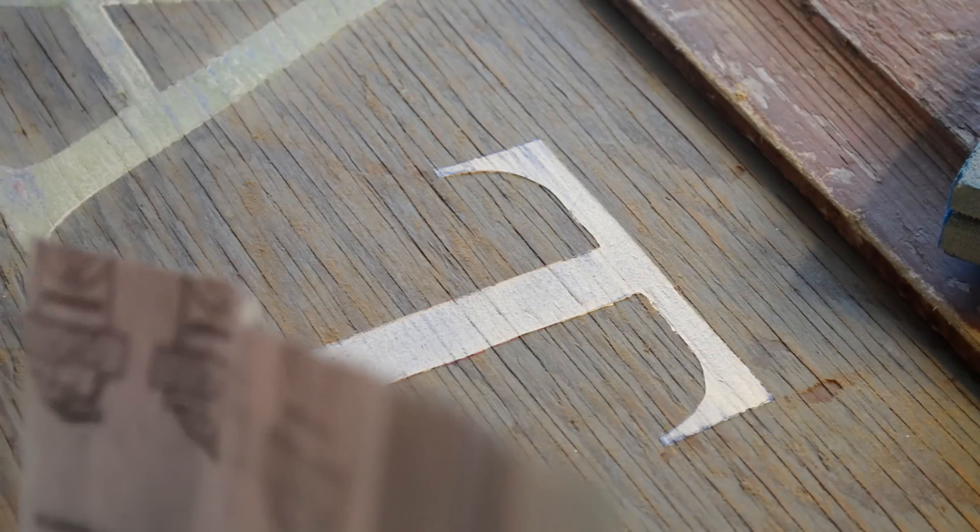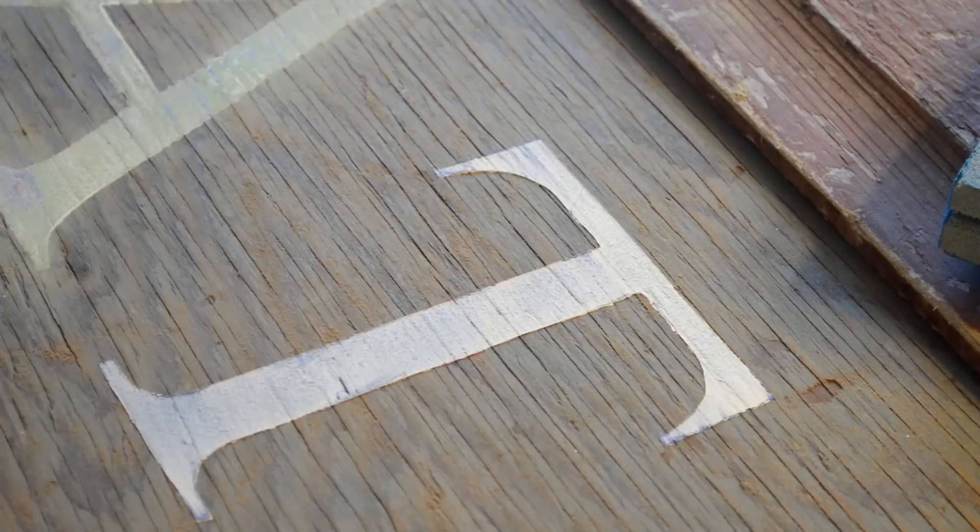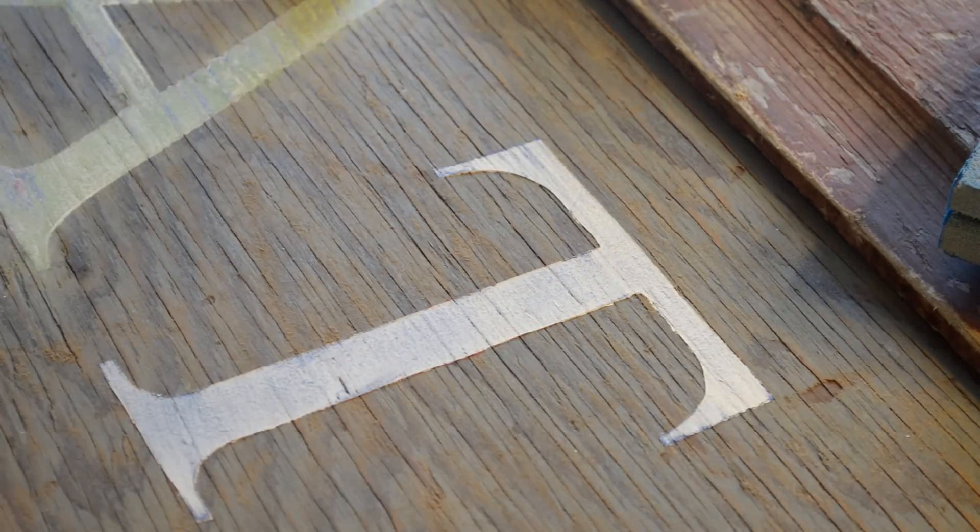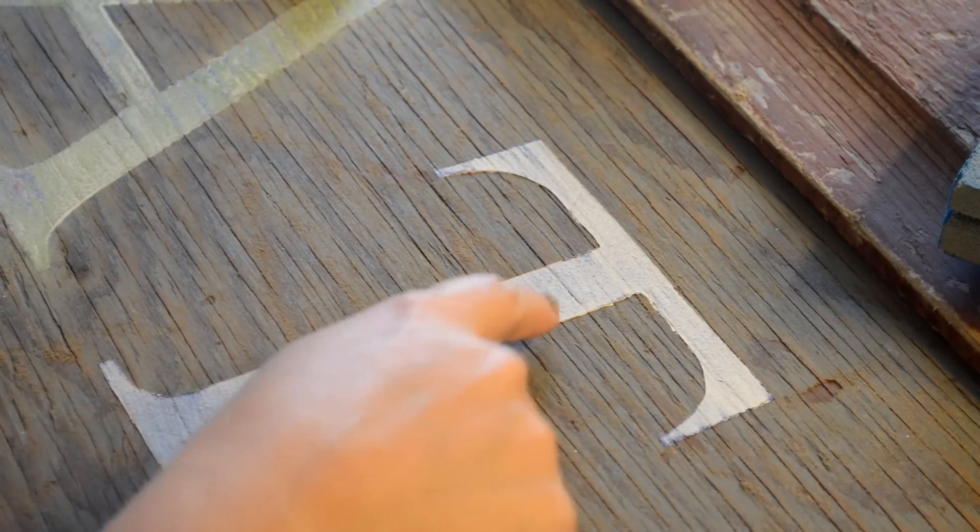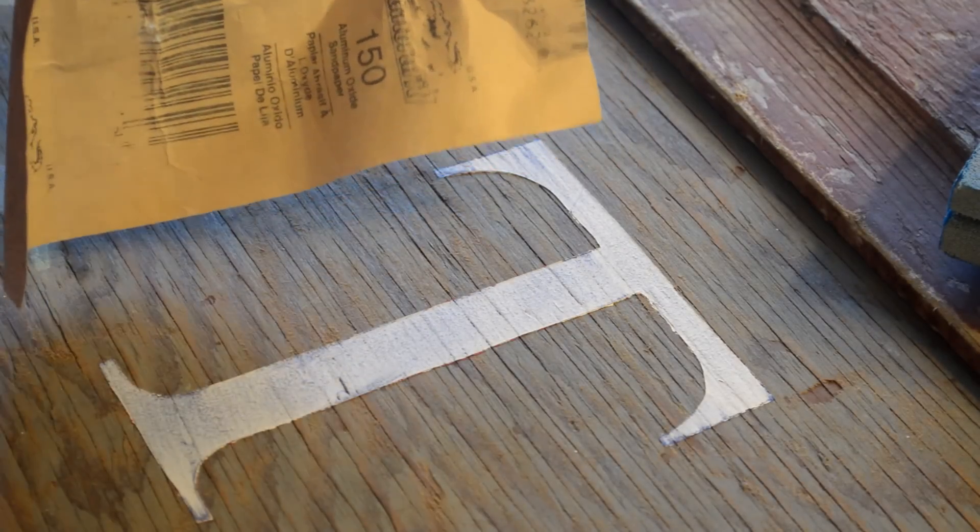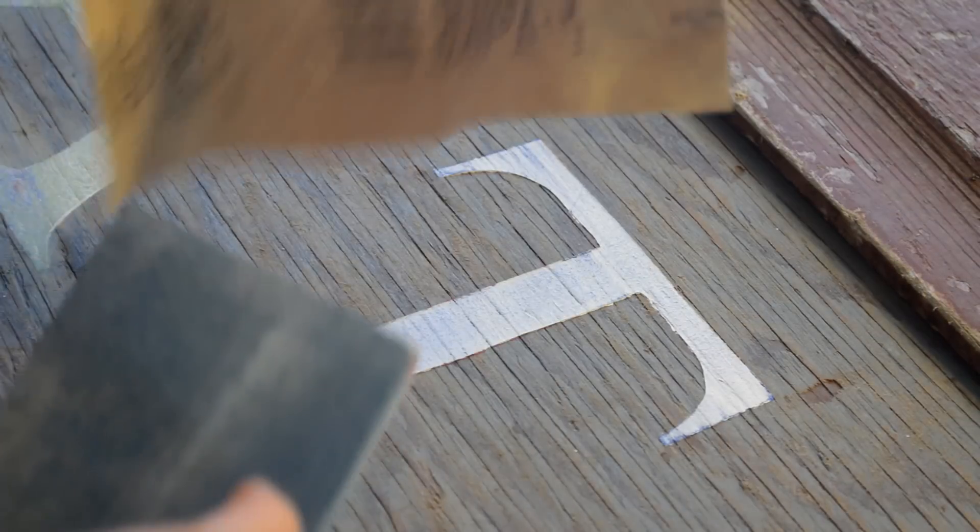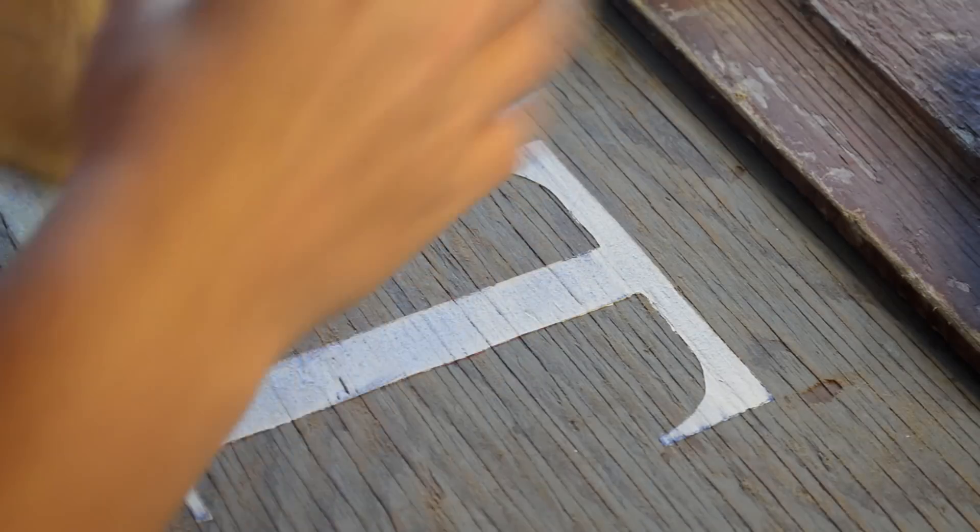Alright, so I finished the E and the A, and now I have the last color on the T. I'm going to show you how to bring out all those beautiful colors that you worked so hard on. So you're going to want two different kinds of sandpaper, a 150 grit and a 320 grit. Start off with the 150.